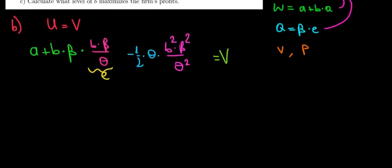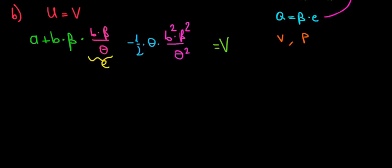Now we can make some simplifications. We will cancel out one theta with one theta from here. So we will have A plus B times—hold on, B times B is going to be B squared. Beta times beta is going to be beta squared divided by theta.